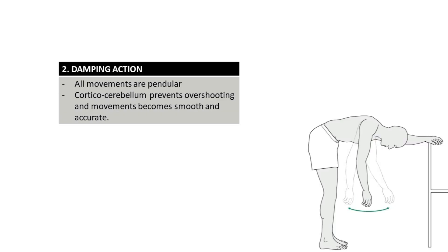Damping action: with its comparator function, the cerebellum provides smooth coordination of agonist and antagonist muscles for the performance of acute purposeful movements. However, all movements are pendular and have a tendency to overshoot. The corticocerebellum sends impulses to the cerebral cortex to discharge appropriate signals to the muscles so that extra exaggeration of muscle movements does not occur, preventing overshooting and ensuring smooth and coordinated movements.